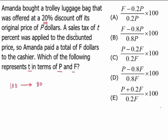A sales tax of T% was applied, let's say T is equal to 10. So a sales tax of 10% was applied on $80. 10% of 80 is 8. So the new price is $88.